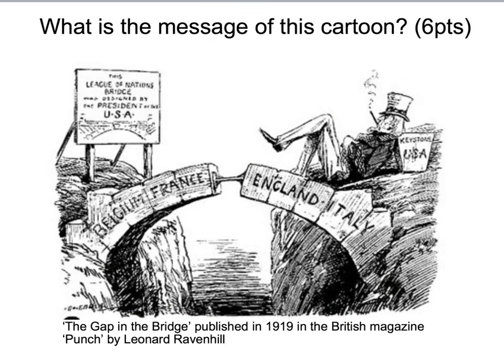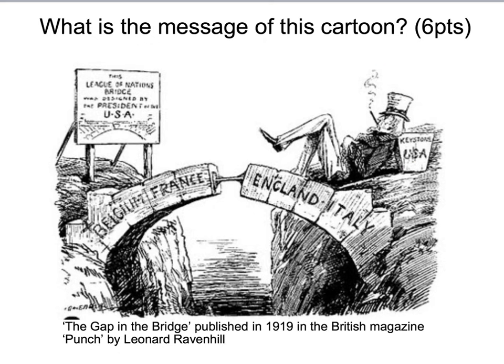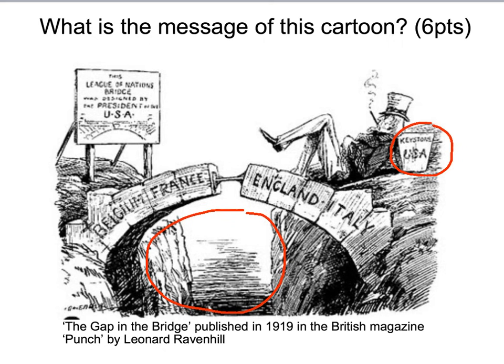Let's have a closer look at the symbols within the cartoon. Remember to look at all the key details, including the sign, which shows the bridge being completed with writing identifying it as the League of Nations bridge, as designed by the President of the USA. America is represented by Uncle Sam, who is sat or laid upon the keystone — the part that is missing and should complete the bridge. Without this keystone in place, the bridge will ultimately collapse and be weak, and the gap beneath could represent the world falling into war again.